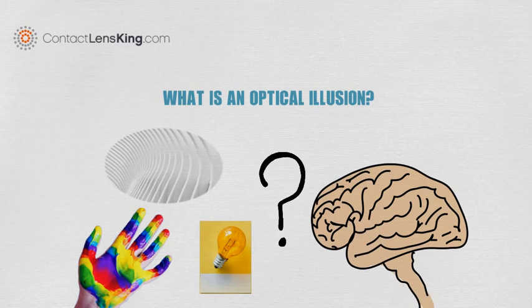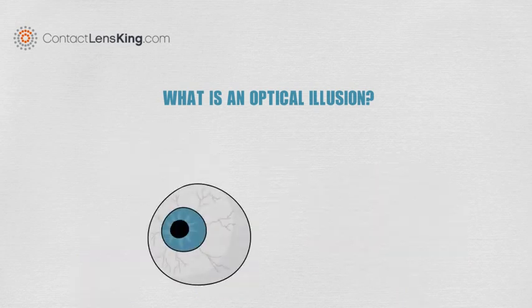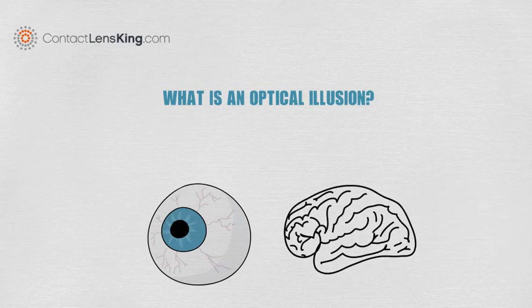When the eye gathers images, they are then processed by the brain, where, at times, our perception does not necessarily match reality.